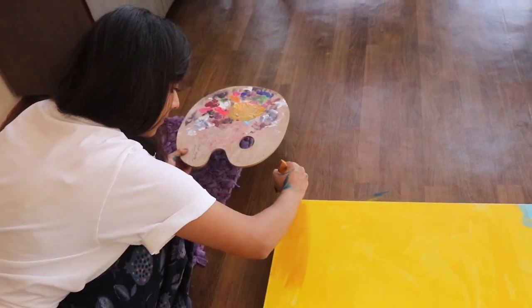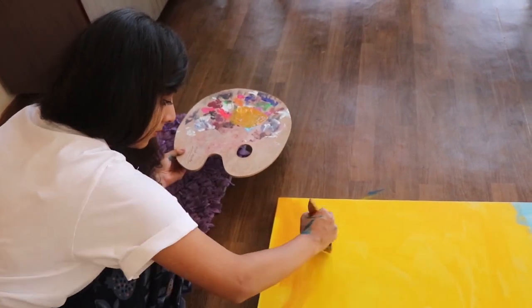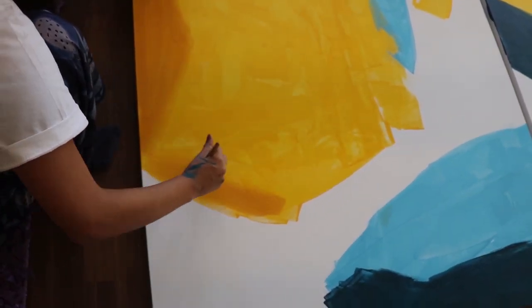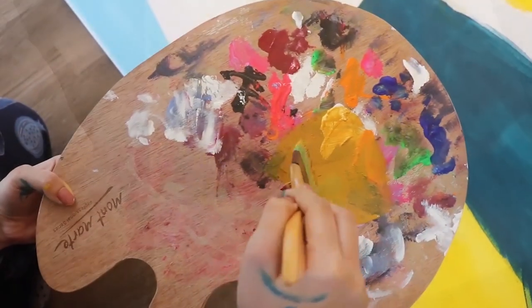The next step was creating highlights. I used a dot of burnt sienna and added it to cadmium yellow. With the help of a flat brush, I created some highlights on the edges.